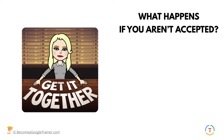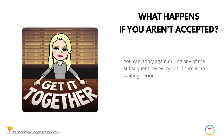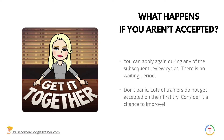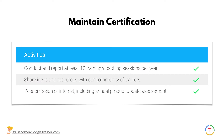If you're not accepted, you can still apply anytime — there is no waiting period, so don't panic. Lots of trainers don't get accepted on their first try; consider it a chance to improve. Once you get certified, that's not the end — you have to maintain certification by doing three things: conduct and report at least 12 training or coaching sessions per year, share ideas and resources with the community of trainers, and each year submit your resubmission of interest including an annual product update assessment. It's a quick Google Form quiz to make sure you're keeping up with Google — not usually very difficult.